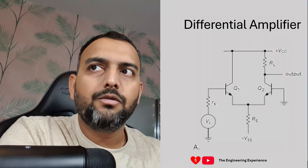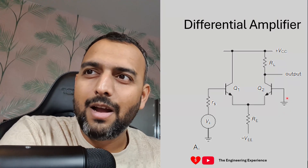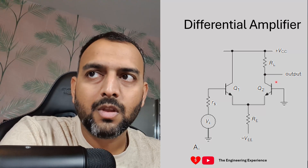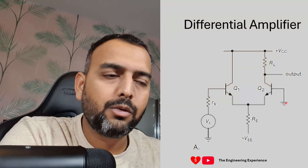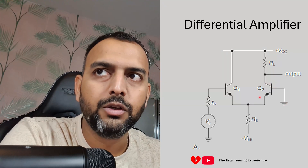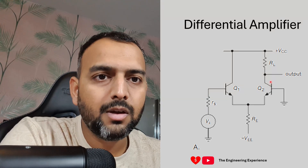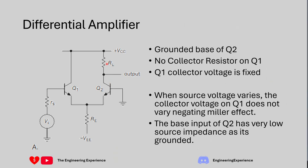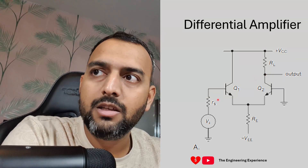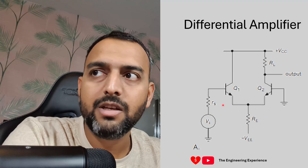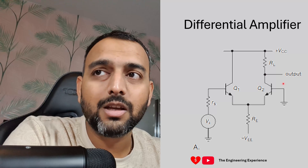First we're going to look at the differential amplifier circuit given in the figure. In this circuit the base of Q2 is grounded, which creates a very low impedance source for Q2. We are taking the output from the collector of Q2, and there is a load resistor connected between the collector of Q2 and VCC, which is our power supply. The input signal is provided to Q1 through some source impedance RS, connected directly to VCC.